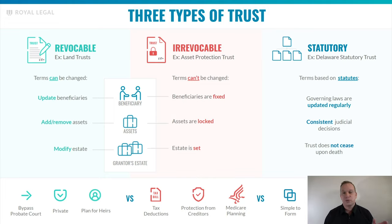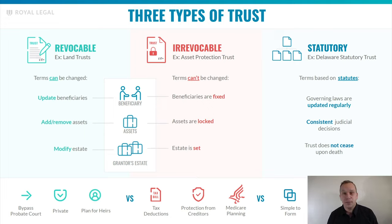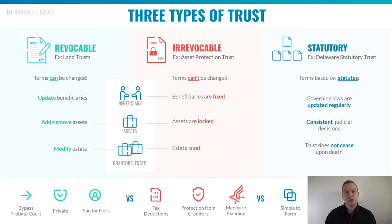We look at revocable trusts for things like land trusts, where we want to create anonymity. We can change the beneficiaries of these trusts — they're very, very flexible at any given time. These types of revocable trusts can also be used as living trusts to bypass probate court. They can keep all of your assets private, both from probate court as well as private on the public records. And because revocable trusts can be changed, it makes them a really great estate planning tool, because you can modify the trust depending upon how you want your heirs or your children to use those assets after you die.